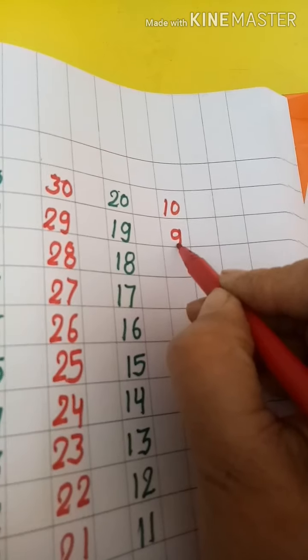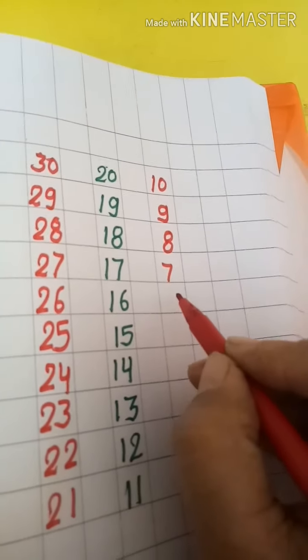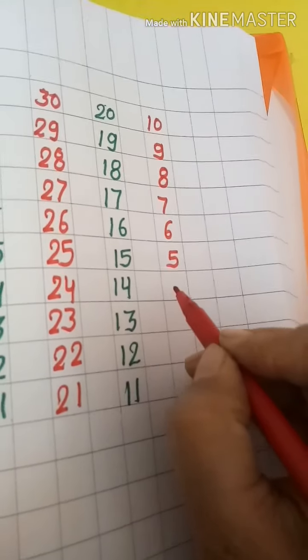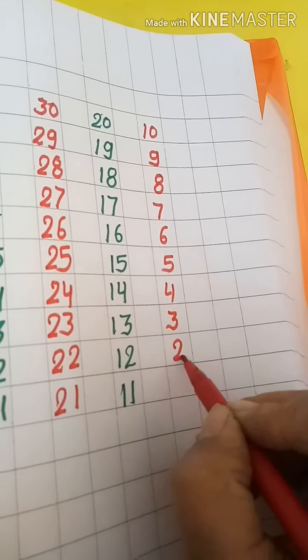10. 10 के पहले क्या आता है? 9, 8, 7, 6, 5, 4, 3, 2, 1.